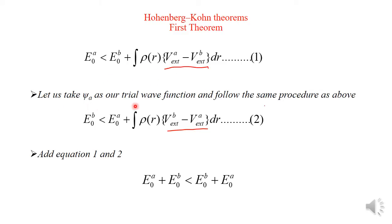Now let us take ψ_A as our trial wave function and follow the same procedure. Naturally, the labels A and B will be interchanged. So comparing with equation 1 and changing the labels, this becomes equation 2: E0B < E0A + ∫ρ(R)(V_B − V_A)dR. Note that in equation 1 the integrand has (V_A − V_B), while here it is (V_B − V_A) because we have interchanged the labels.